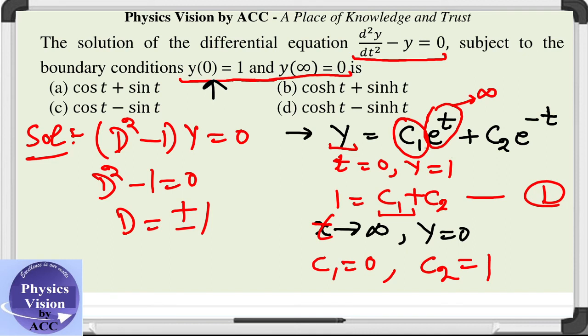Thus, the final solution of this equation is c₁ is 0, this is gone, and this is e raised to the power minus t. The solution is e^(-t), which can be written as cosh(t) - sinh(t). That is option d is the correct answer to this question.